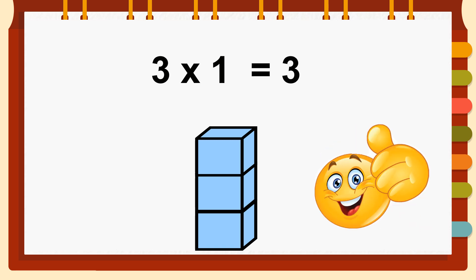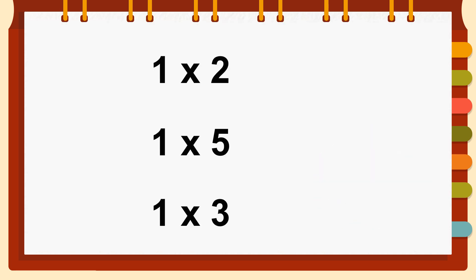Any number multiplied by one is the same. What if we change the order of the numbers? Does it change the answer? No, it remains the same. One times two equals two. One times five equals five. One times three equals three. What if we have one times a million? One times a million remains a million. Any number multiplied by one is the same.